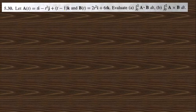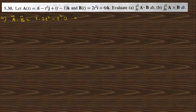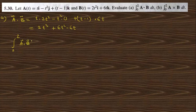Question 5.30: given vectors a and b, evaluate the integrals. For part (a), first find a · b. The dot product gives t·(2t²) + (−t²)·0 + (t − 1)·6t, which simplifies to 2t³ + 6t² − 6t. Now integrate from 0 to 2: integral of (2t³ + 6t² − 6t) dt.